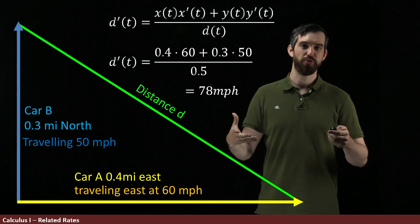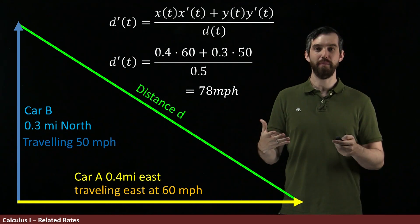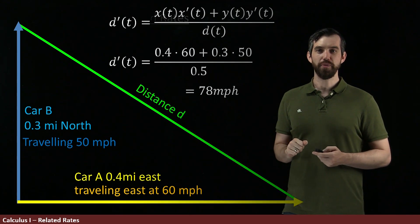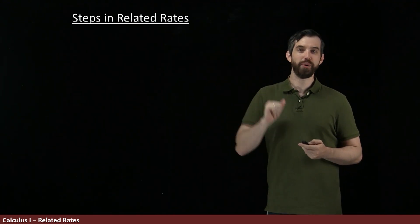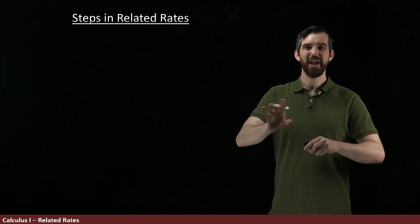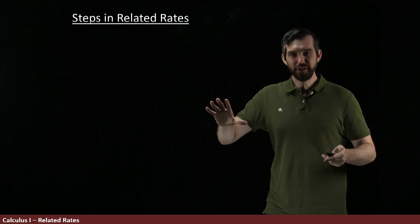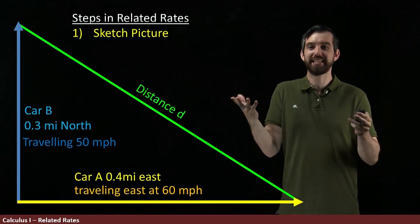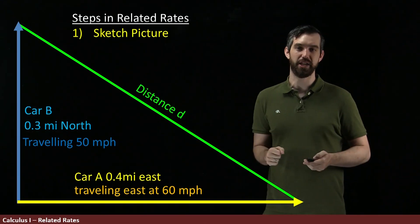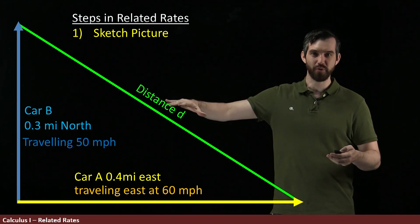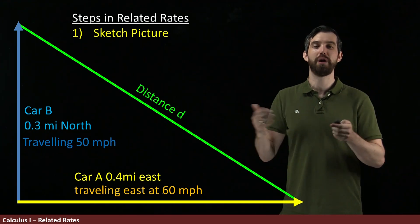Alright, so the major steps in these related rate problems will be more or less the same even if the specific picture is going to change. So the steps as I see it are, for related rates problem, the first thing is, if I give you some word problem, you have to understand it, you have to be able to sort of visualize it. So the first step that we would always do is to sketch some picture of it, and that's what we did in this particular example. We sketched where car A was, where car B was, what this distance was, and we got this nice visual representation of it.